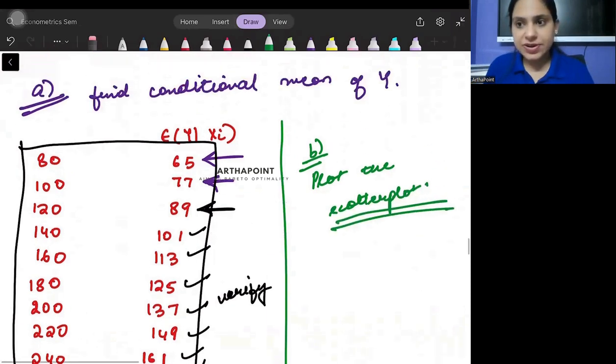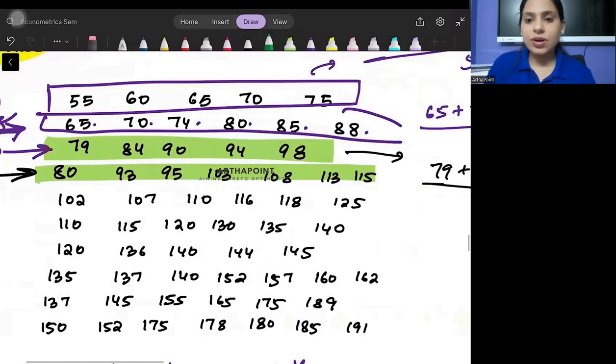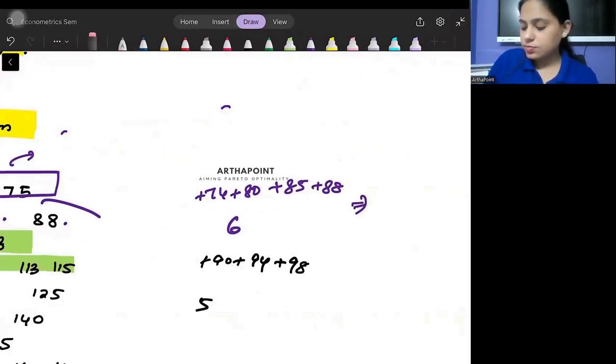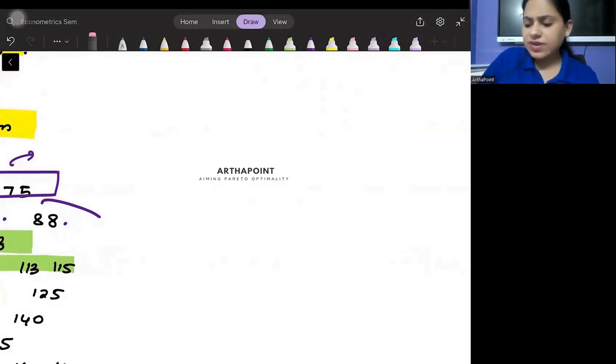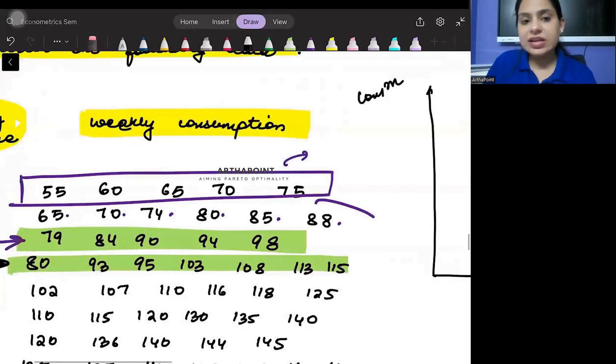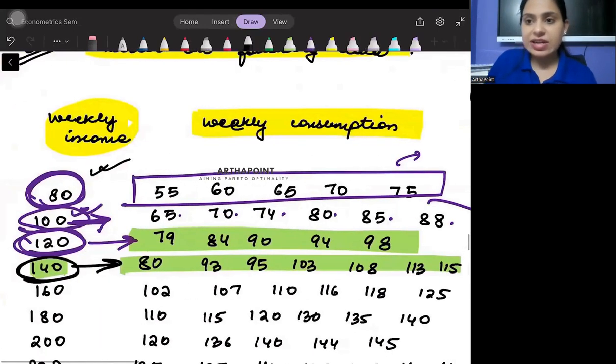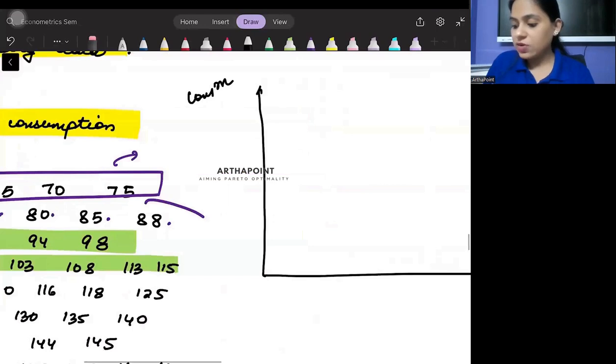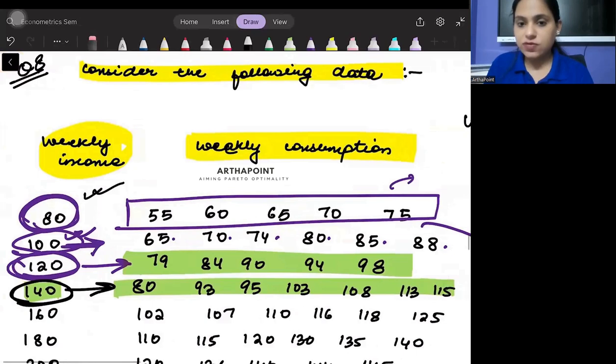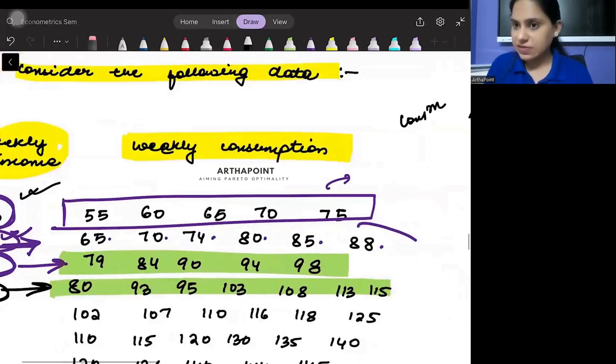Plotting is pretty simple. I will make a rough diagram. For example, if I take weekly consumption here and weekly income here, when weekly income is 80, I will take a point of 80 here, and against 80 I will plot different points: 55, 60, 65, 70, and 75.